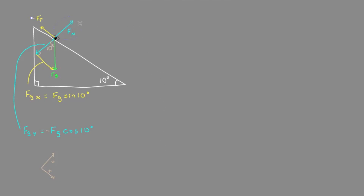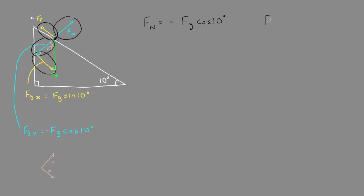Let's see what's equal and opposite. The normal force is equal and opposite to the force of gravity in the y direction, because this block is not going anywhere — it's not going into the hill or off the hill. So we set them equal: the normal force is the same magnitude but opposite sign. In the horizontal direction, what's opposing the x component of gravity and preventing the block from sliding is the force due to friction. They're the same magnitude, just opposite signs. So the force of friction, which we said was negative, equals the force of gravity in the x direction: fg times sine of 10.